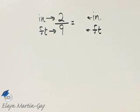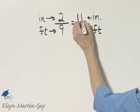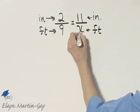So we want to find the length of a home represented by a line that is 11 inches. Since that's in inches, that will go in my numerator. And we're looking for a length in feet. We're finding the length of a home in feet. I'll let that be x.